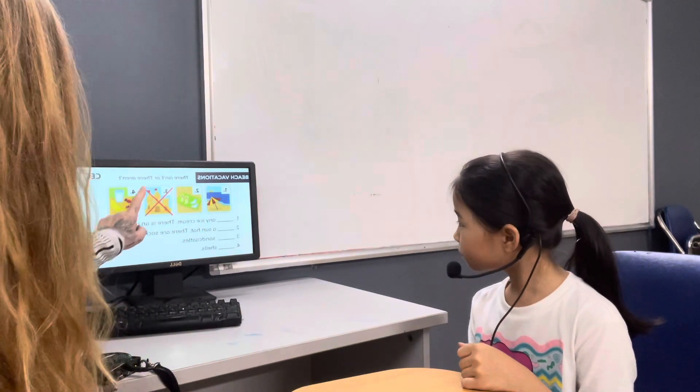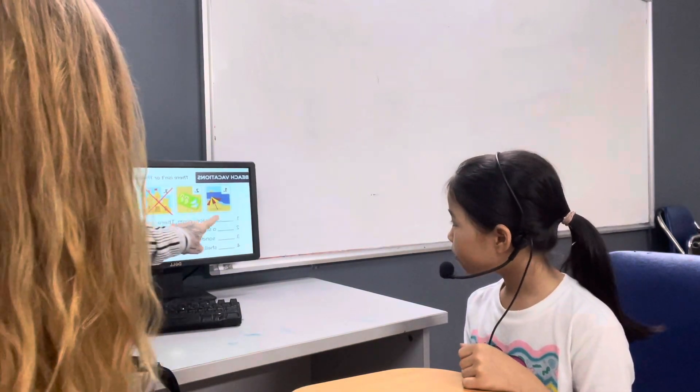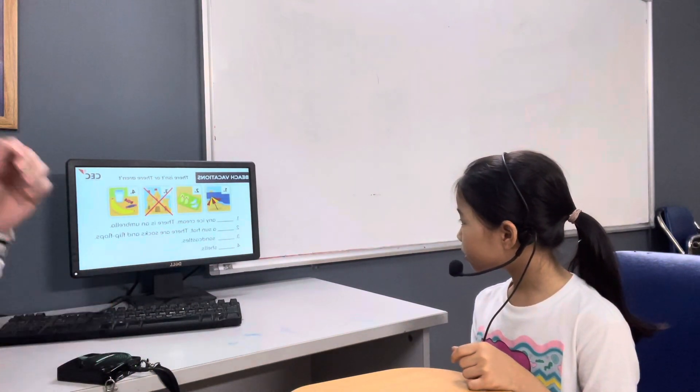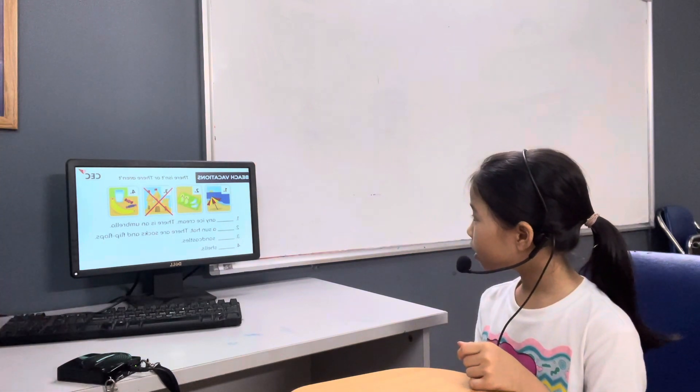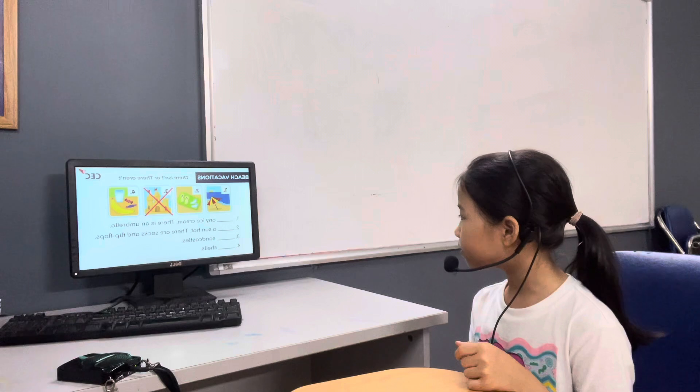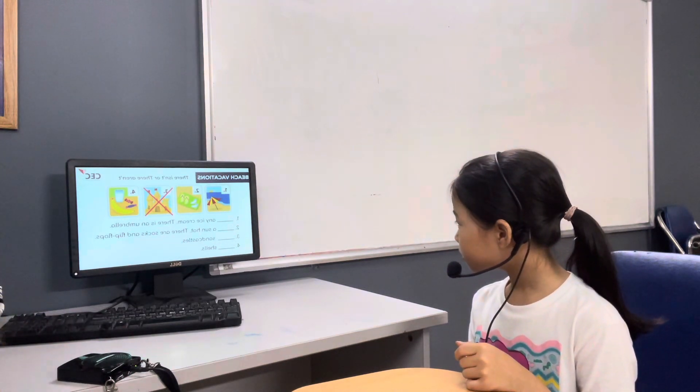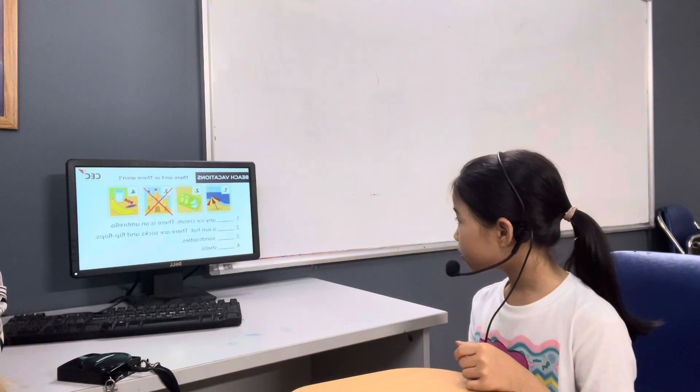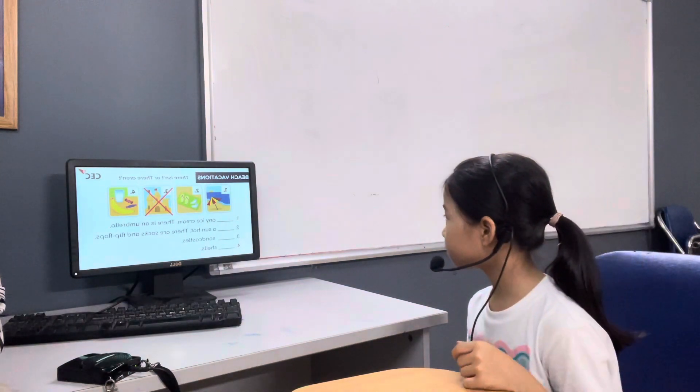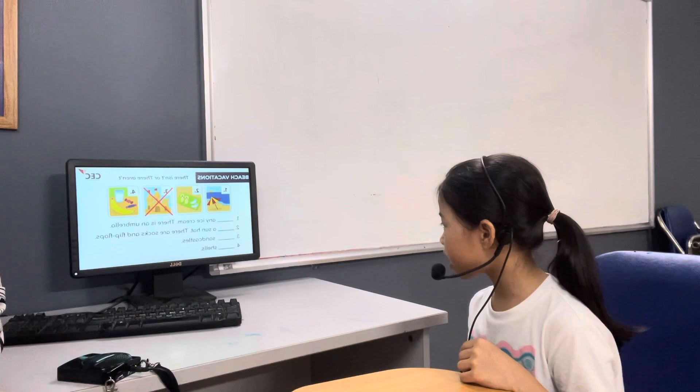Look at the pictures. Say there isn't or there aren't. Complete the sentence for me. There isn't any ice cream. There is an umbrella. Good job. Do you have a second? Say number three for me. There isn't some queso. Number four. There aren't shares. Good.